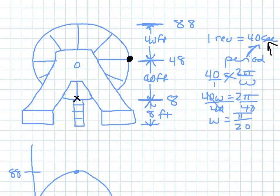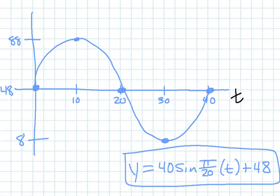I start at 48, when time is 0. And, since it tells me that it takes 40 seconds to complete one rotation, that must be the period. So then, I use the period to help me find my omega value, which ended up being pi over 20.